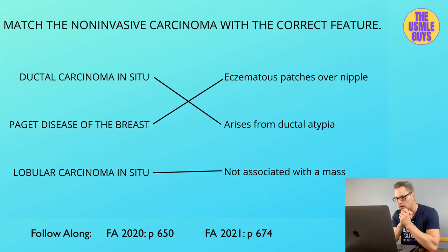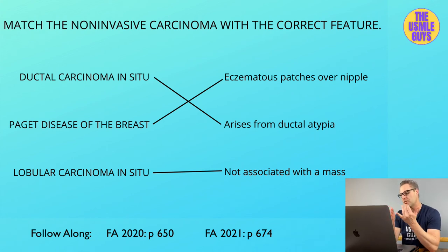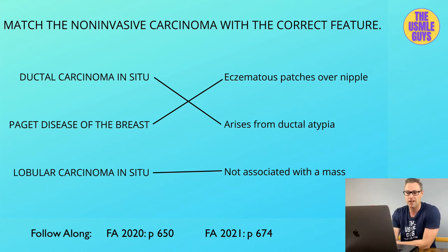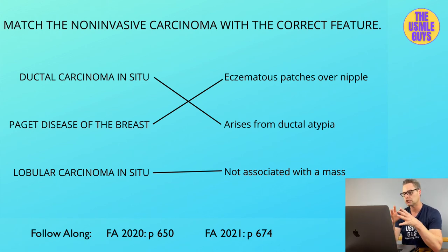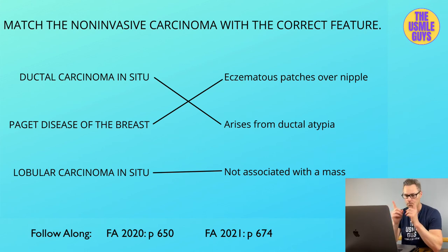Paget disease is caused by extension of underlying DCIS or invasive breast cancer up the lactiferous ducts and into the skin of the nipple. Lobular carcinoma in situ is found incidentally on biopsy because it doesn't present with a mass or calcifications. It's associated with decreased e-cadherin expression — e-cadherin helps maintain epithelial integrity — and carries an increased risk of cancer in either breast.